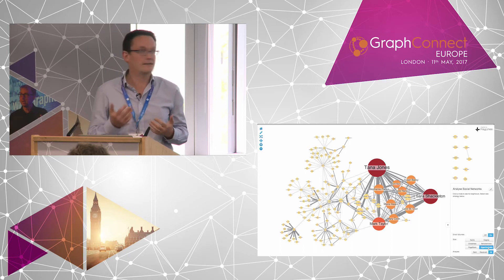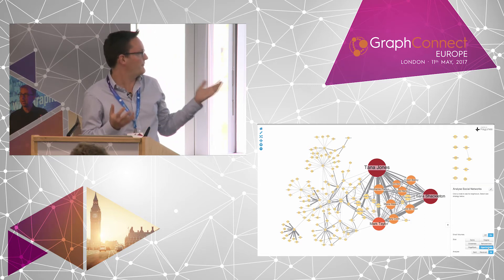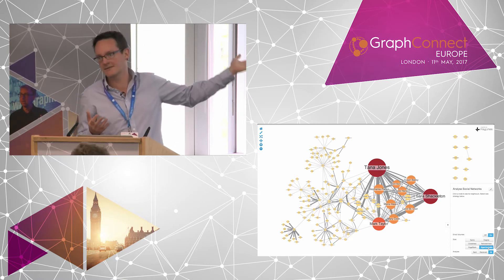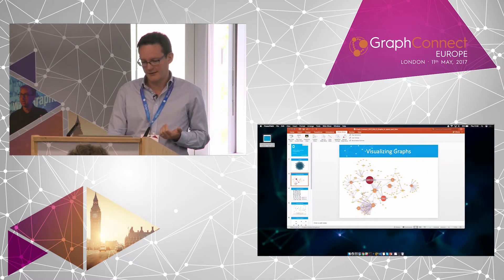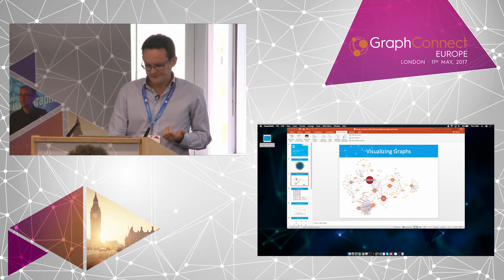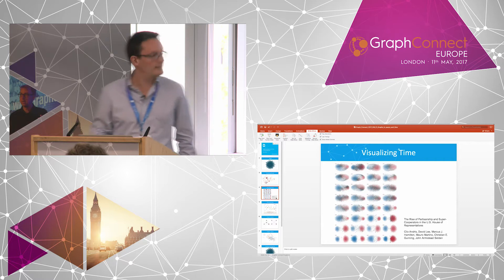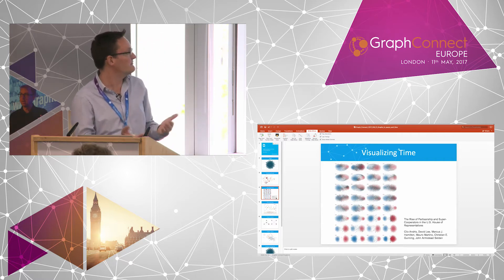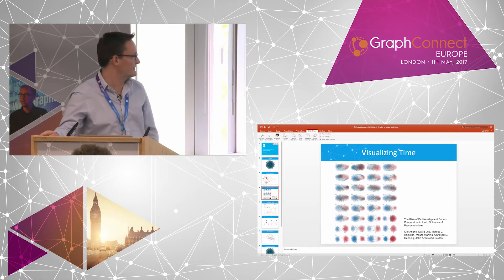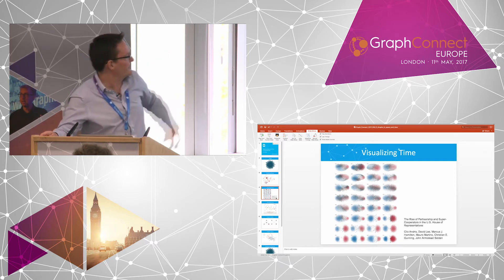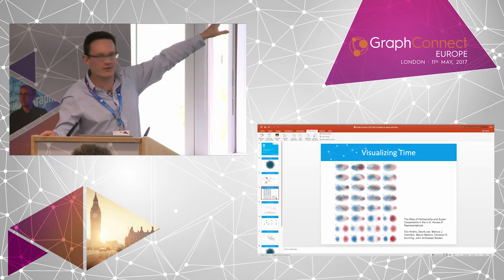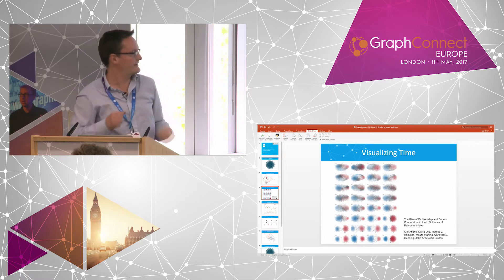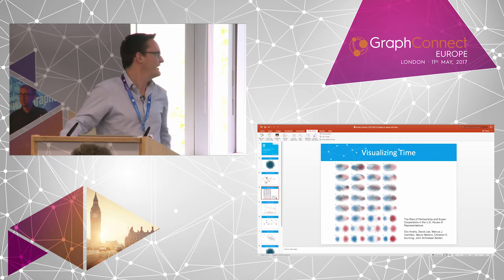Neo, of course, is really good — as are other databases — for storing any kind of information you want. It's a very open schema, so we can store a timestamp on these links, no problem. But how do we visualize it and get that insight out of it? Here's one example of how you visualize time: you can just show lots of snapshots. This shows congressmen in the U.S. House of Representatives and how they voted over time and how they collaborated. You can see at the top of the picture a lot of collaboration — more recently, hardly any, a lot of partisanship. That's a useful insight.